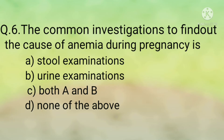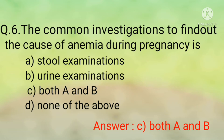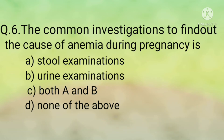Question number six: The common investigations to find out the cause of anemia during pregnancy are: option A, stool examinations; option B, urine examinations; option C, both A and B; option D, none of the above. The correct option is option C, both A and B. Stool examination is done to detect helminthic infestation, particularly hookworm, which can also cause anemia. Urine examination is done to detect the presence of protein, sugar, and casts. A clean midstream specimen of urine is subjected to culture and colony count — if the count is over 10⁵ per ml, it indicates infection.